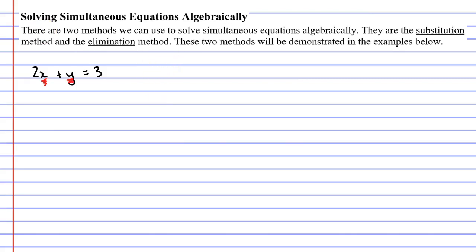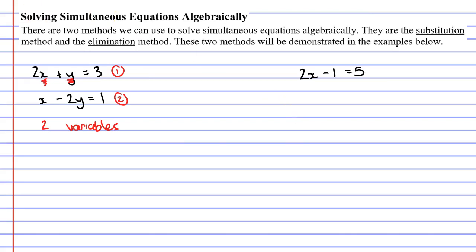Now if you have two variables, in order to solve it, you need to have two equations. So I might have another equation with the same variables, and it might say x minus 2y equals 1. We require two equations in order to find the two variables. When we first learned about equations, we would solve ones with only one variable, such as 2x minus 1 equals 5. The one variable we have here is x, so we only need one equation in order to solve it.